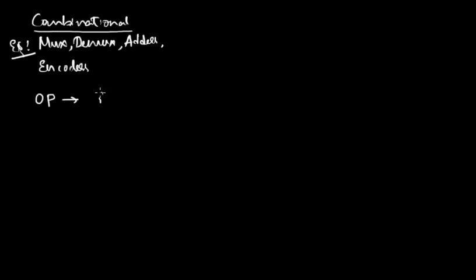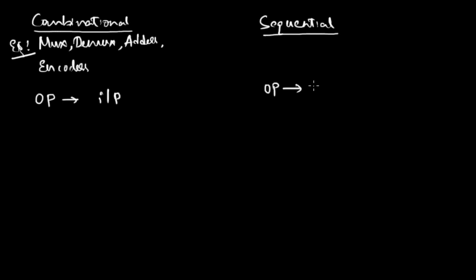In case of combinational circuits, the output at any given time is dependent on the inputs at that time. In contrast, we have sequential circuits, where the output not only depends on the input at that time but also depends on the past history of the input.